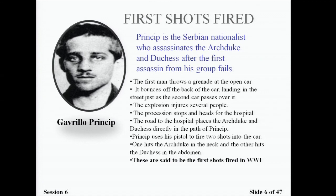Princip was a Serbian nationalist who assassinated the Archduke and the Duchess after the first assassin from his group failed at his attempt. The first man threw a grenade at the car which bounced off and landed in the street. The Archduke and Duchess were on their way to a luncheon at the governor's mansion. Once the second car passed over the grenade, the explosion injured several people. The procession headed for the hospital, placing them right in front of Princip, who fired two shots — one hitting the Archduke in the neck and the other hitting the Duchess in the abdomen. These are said to be the first shots fired in World War I.